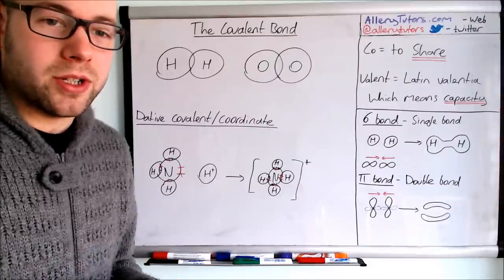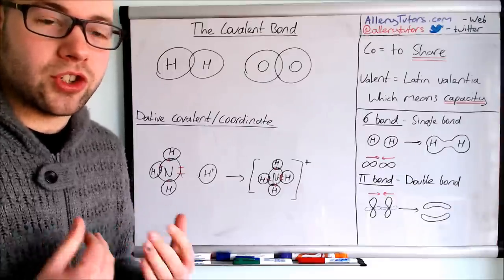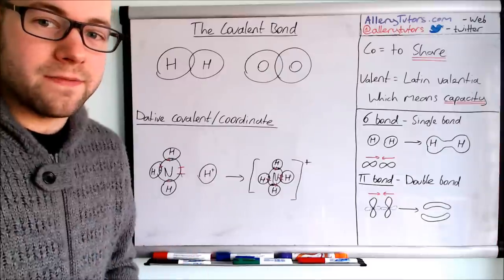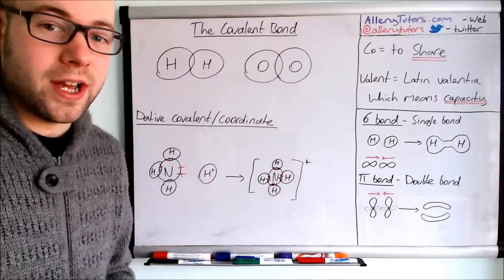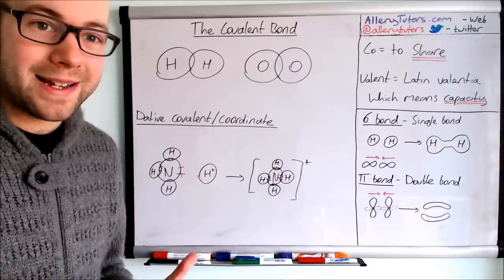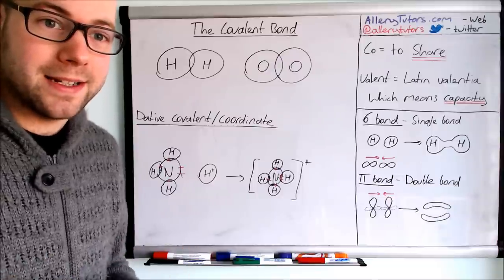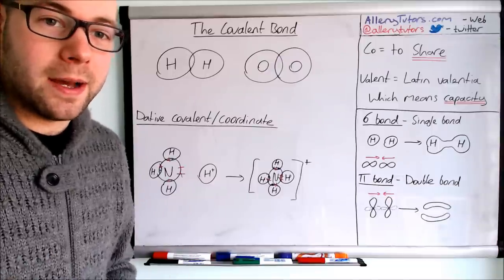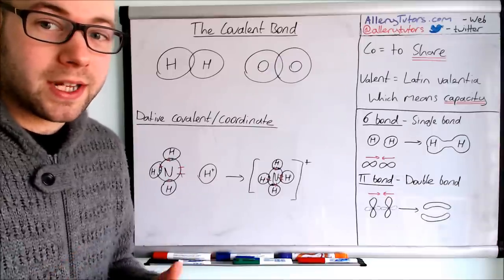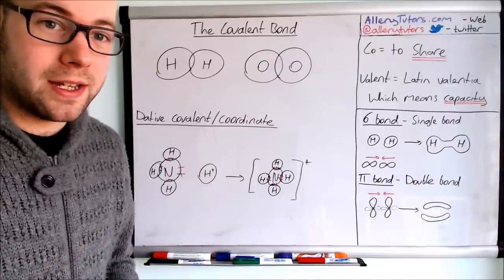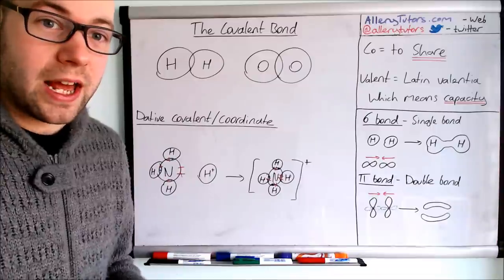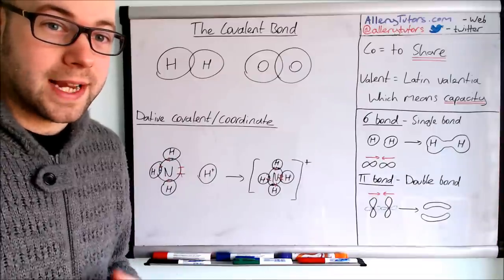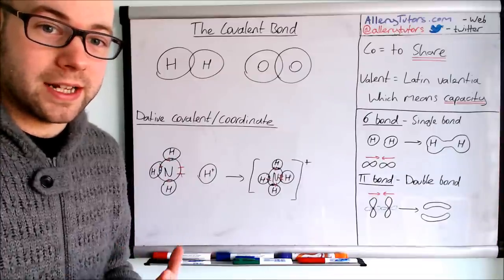Covalent bond: 'co' means to share, and 'valent' comes from the Latin word 'valentia', meaning capacity. Put together, it's basically the capacity to share electrons — in other words, how many electrons an atom can share.